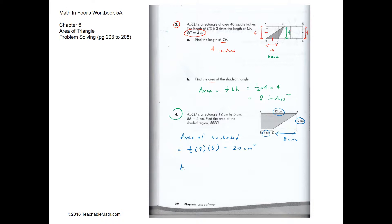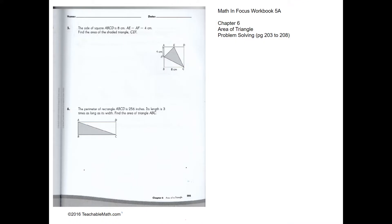The area of the shaded region equals the area of the whole rectangle — 12 times 5 — minus the unshaded region of 20. That gives 60 minus 20, which is 40 cm squared.